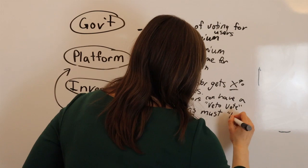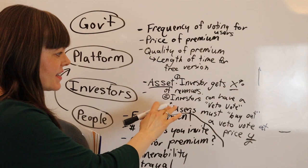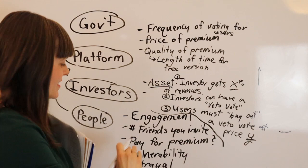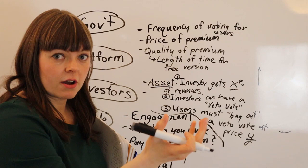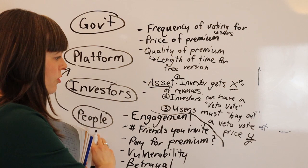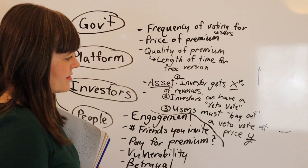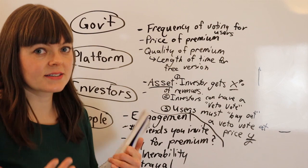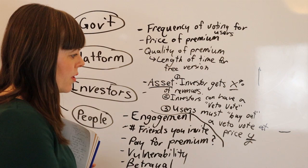So to summarize the asset: investors are guaranteed x percent of revenues; investors can veto a vote that users have made when trying to get the platform to maximize their social welfare; but if the majority of investors vote to veto a particular governance change, the only way that user vote goes through is if the users buy out the veto vote. How much do they need to pay to buy out that veto? That's another choice variable for the platform management team to come up with when setting up these assets.